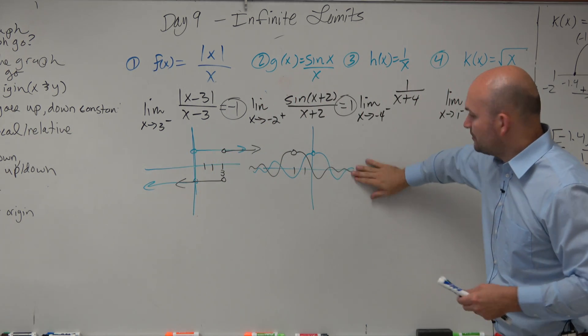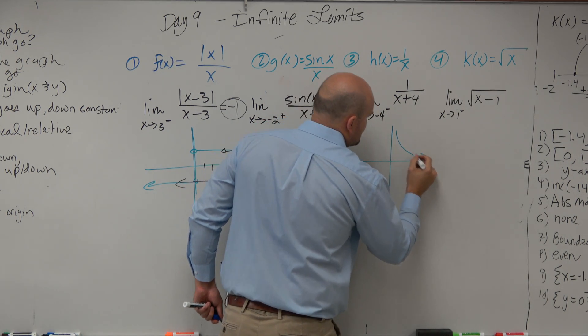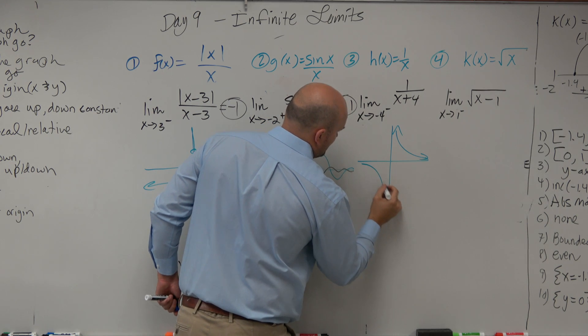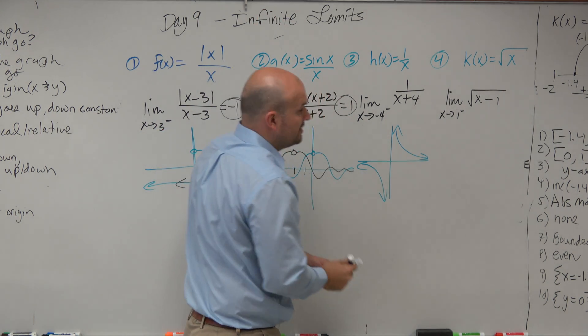Let's look at the reciprocal function. When we looked at the reciprocal function 1 over x, the graph looked like this. From the right, it went to infinity. From the left, it went to negative infinity.